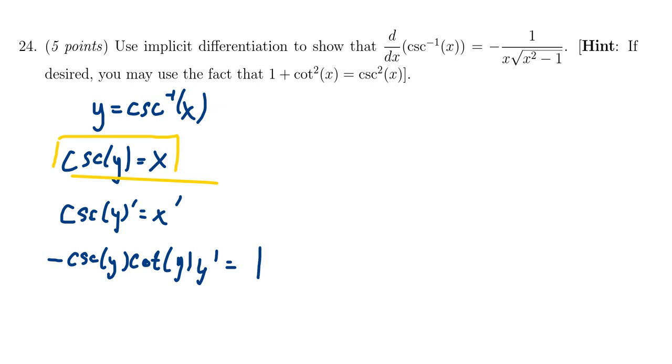If you solve for y prime, you end up with 1 over negative 1 over cosecant of y times cotangent of y, for which this is now why we marked that box we did earlier. Notice that cosecant of y is equal to x. That's going to take care of this x right here.